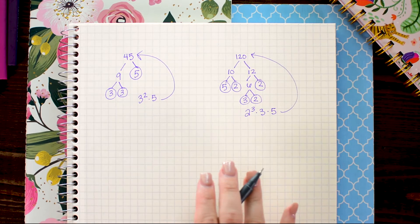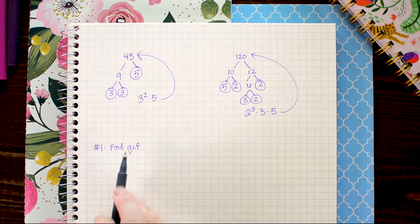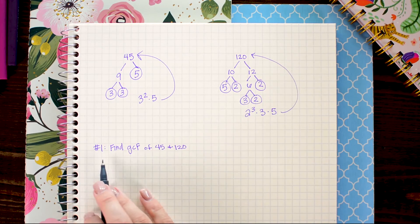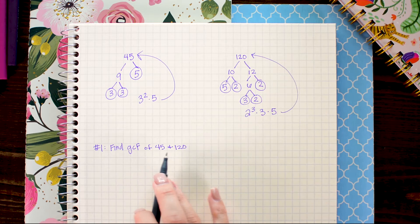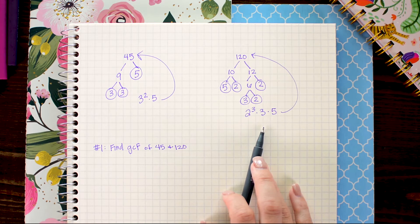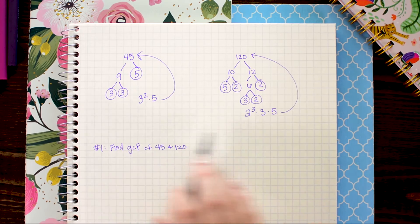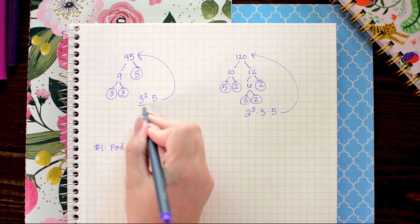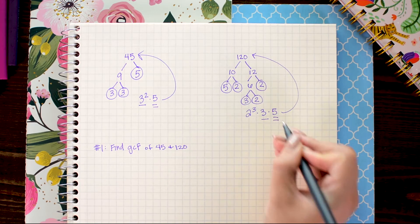So now I'm going to show you some cool things that you can do once you find your factor trees. Let's find the GCF or the greatest common factor of 45 and 120. So what you need to do is you need to multiply the factors that are common to both. As you can tell I have a 3 and 5 that are common to both of my factorizations.